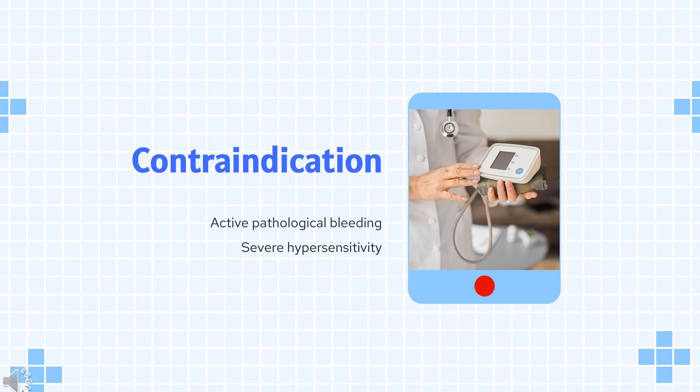Contraindications: Prasugrel should not be given to people with active pathological bleeding, such as peptic ulcer, or a history of transient ischemic attack or stroke, because of higher risk of stroke, thrombotic stroke, and intracranial hemorrhage.